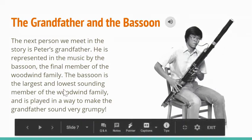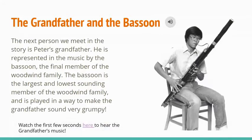Our next character is the grandfather — Peter's grandfather, who he lives with — and he's represented by the bassoon. He's represented in the music by the bassoon, our final member of the woodwind family.